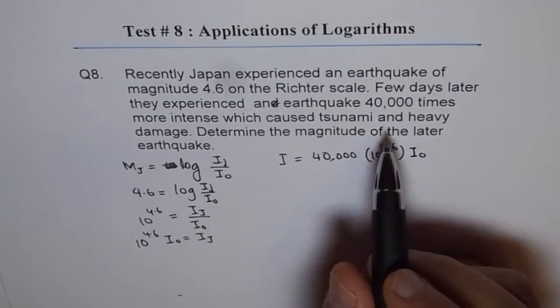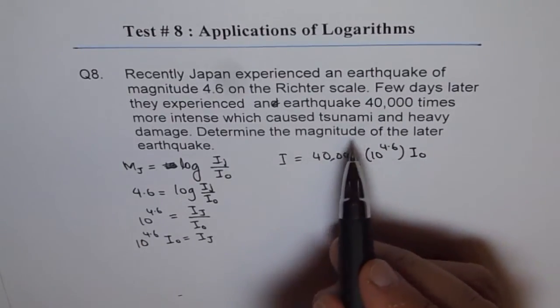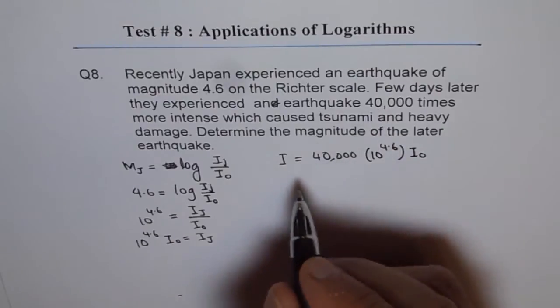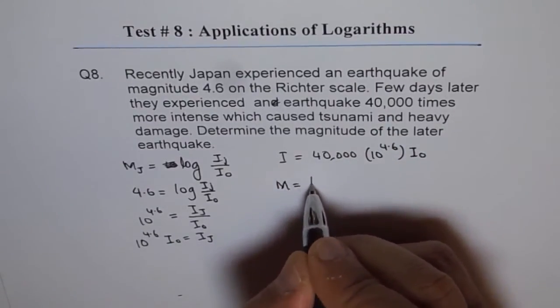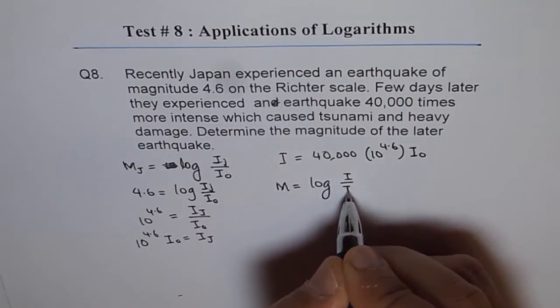That is the intensity of this earthquake. Now we need to find the magnitude. The magnitude equals log of this intensity I over I0.